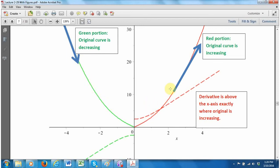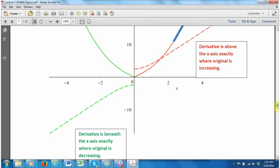On the other hand, the red portion represents where the original curve is increasing and you see that the derivative is also above the x-axis in exactly the same region. So this tells me that the derivative is most likely correct.